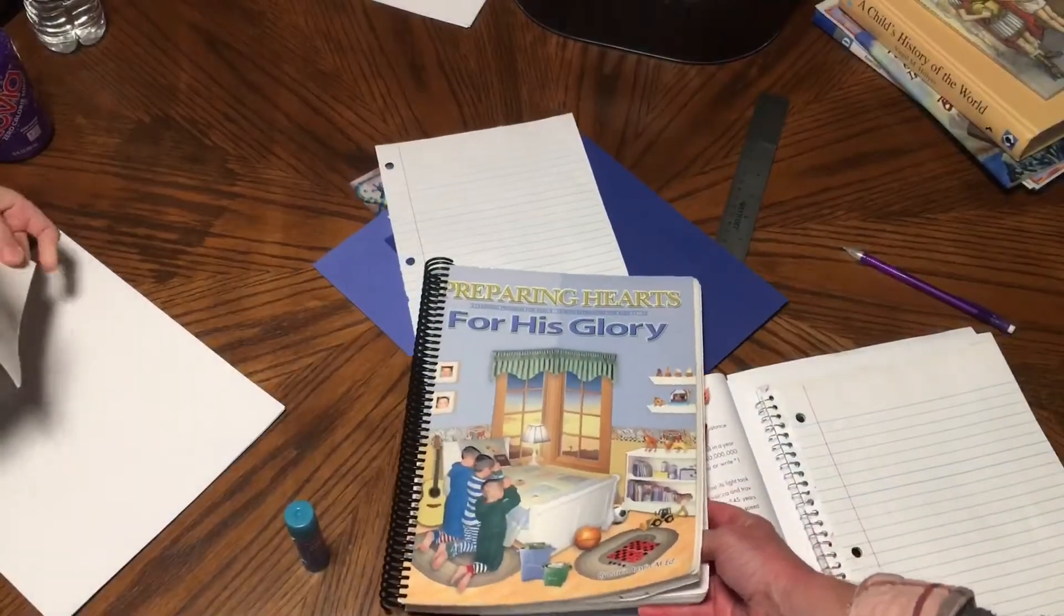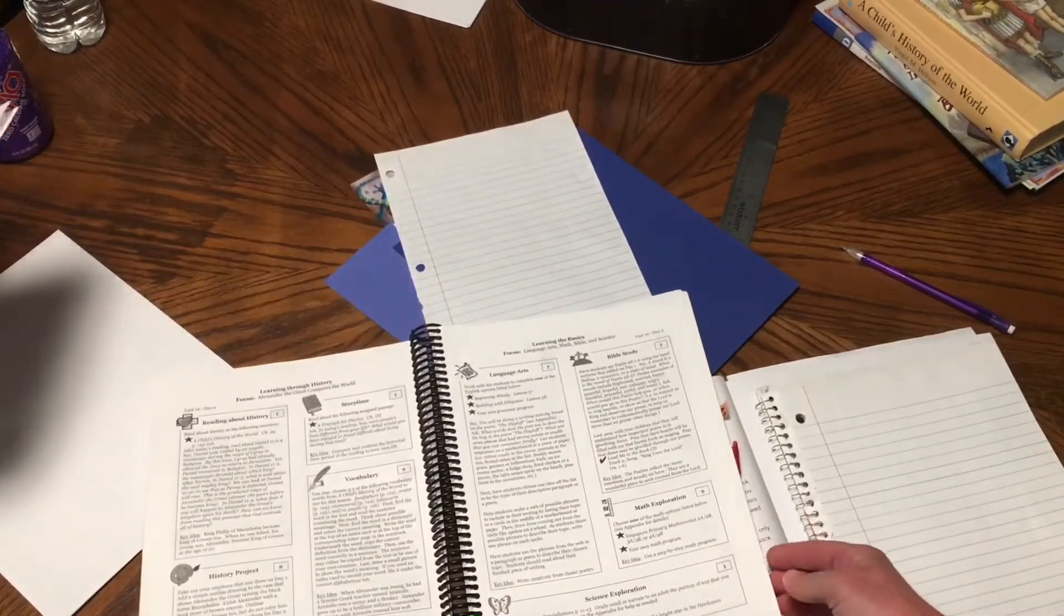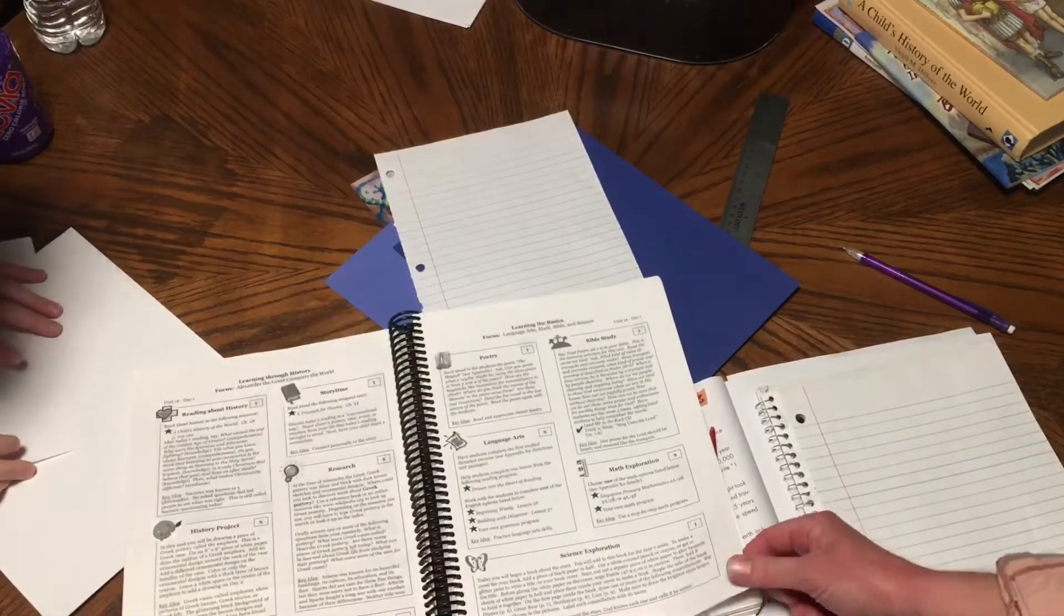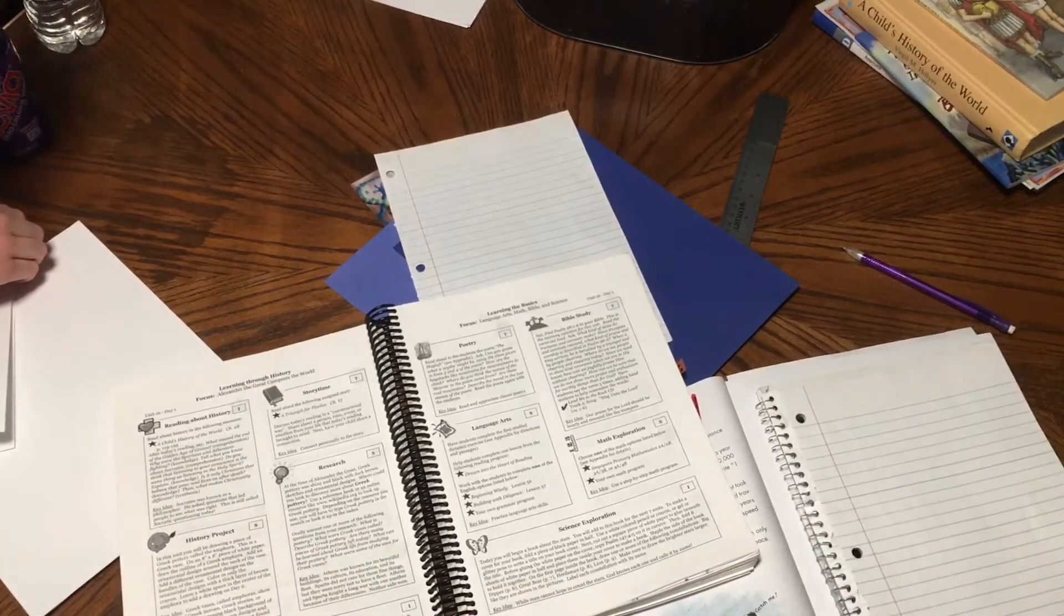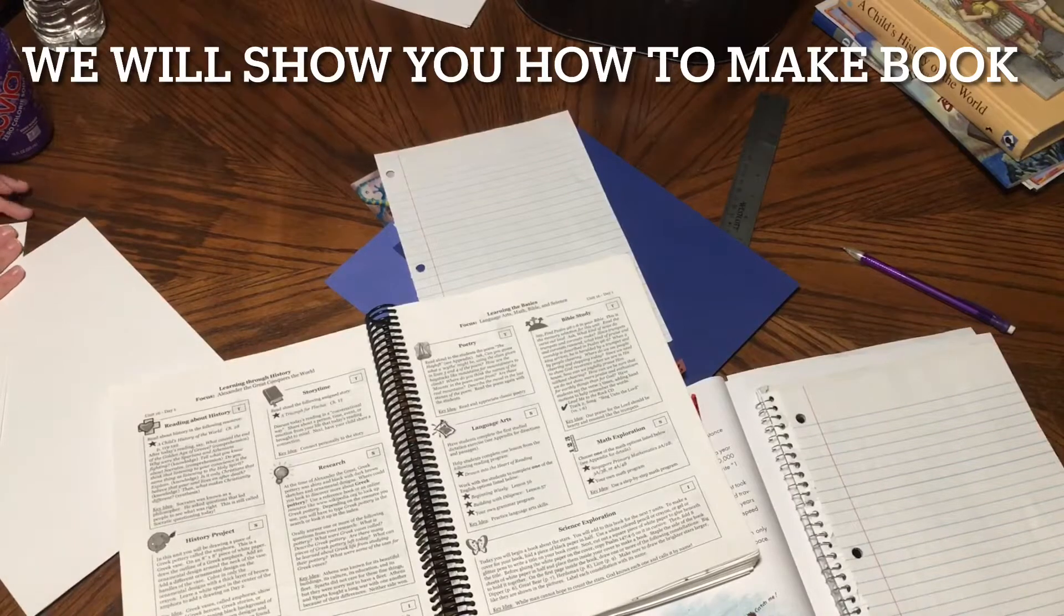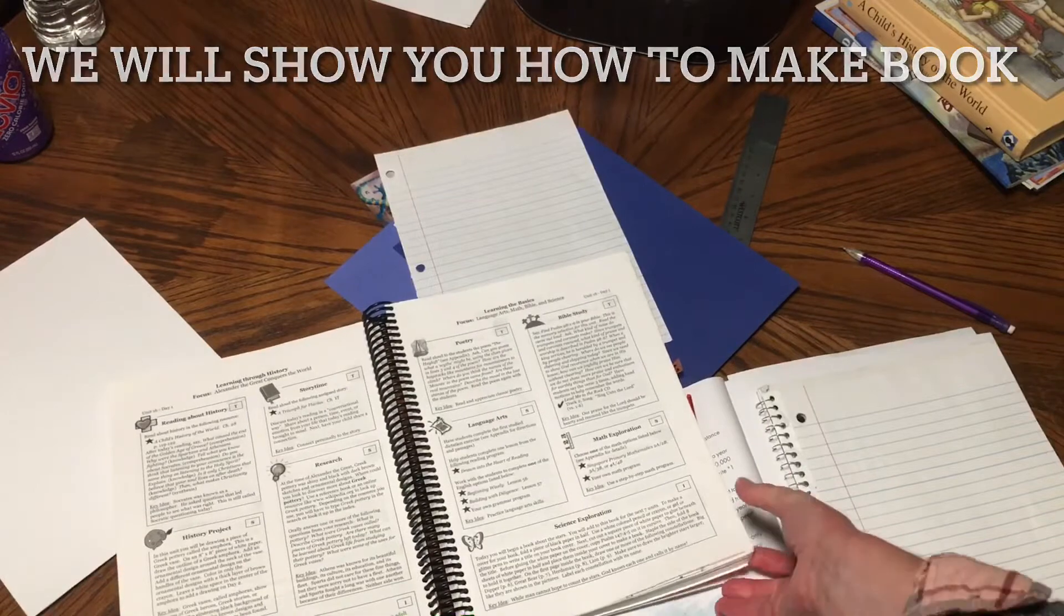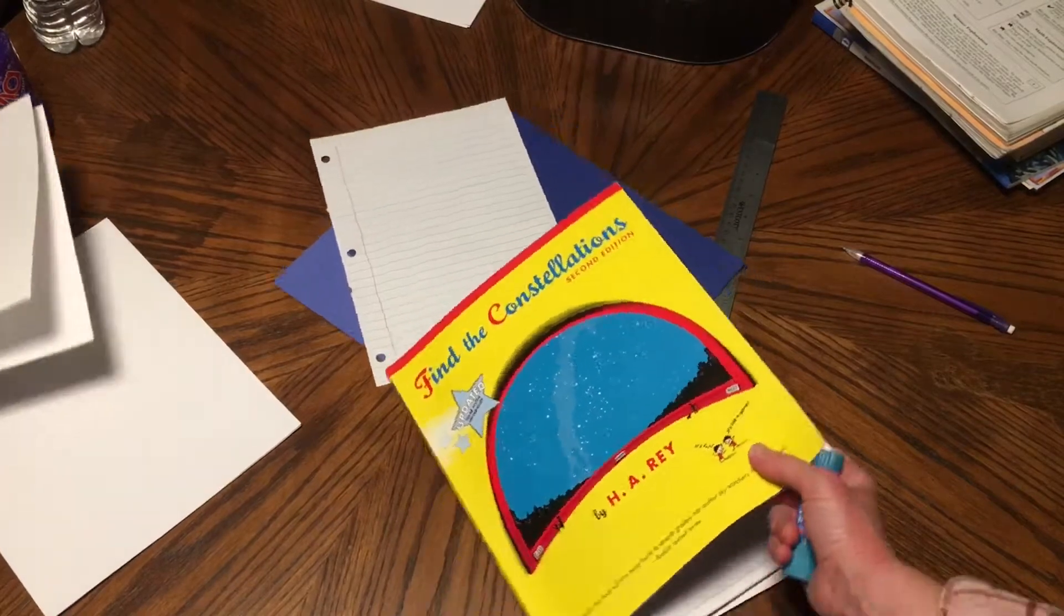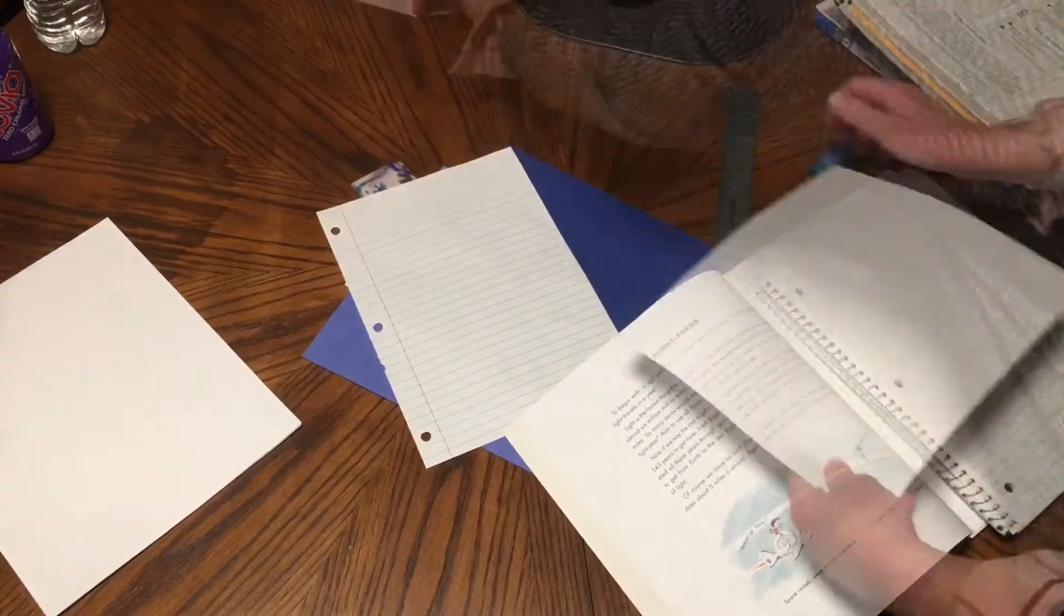We're going to be doing the science out of Preparing Hearts for His Glory. This is week 16, day one. Today it says we will be making a book, and that's what we're going to work on and show you how we're going to put that together. We are working on Find the Constellations, and this is what our book is going to be about.